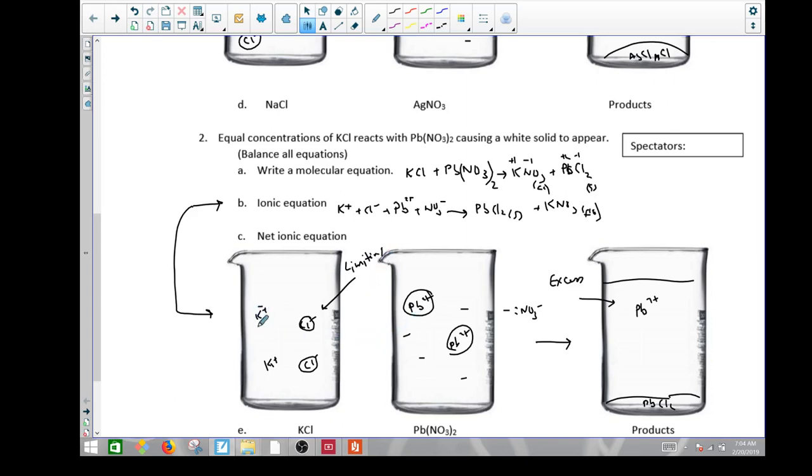These guys did not get used. I circle them just as I use them, as I put them over to the products. So I have one, two, three, four anions, a K plus, and a K plus. And spectators here are just going to be the K plus and the NO3 minus. My net ionic is just Pb two plus, plus Cl negative yields PbCl2, and there'll be a 2 right here.